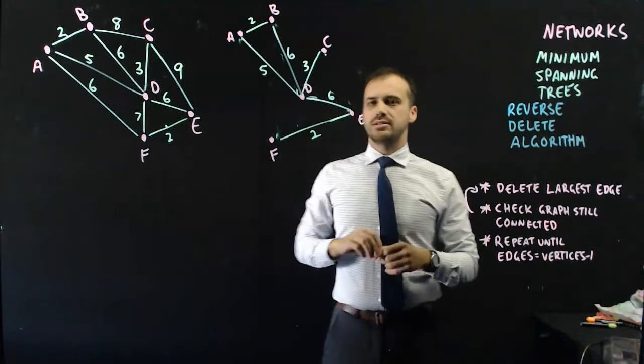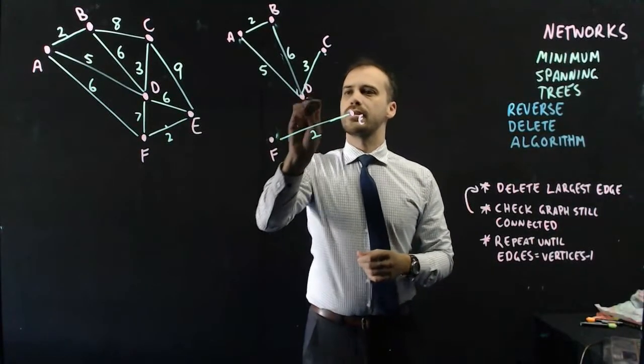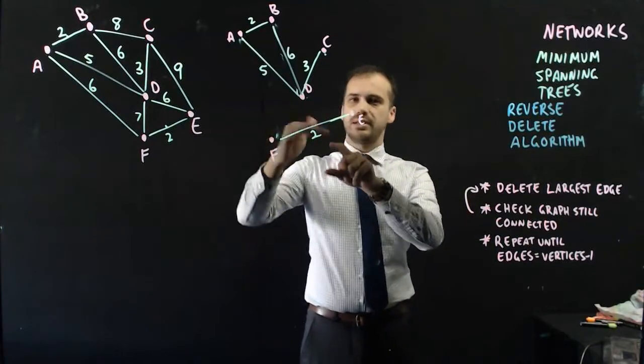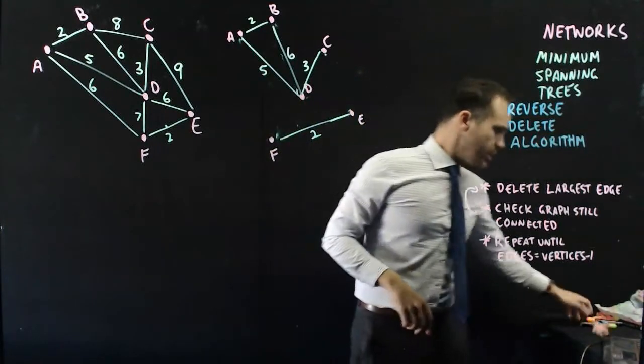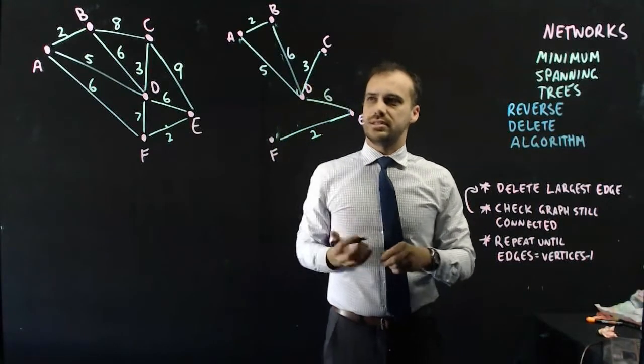What about this six? Why don't I delete that? Is everything still connected? Uh-oh. F and E have been cut away from the group. So, I'm going to have to put that back. I've made a mistake. Control-Z, undo. Here's the six back again.